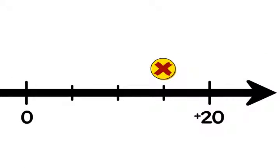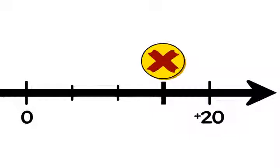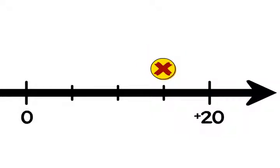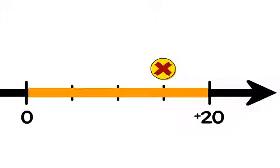What is step one? That's right, find the benchmarks. Let's use zero and positive 20, since point X is between them. To finish step one, what is the interval? You got it. The interval between zero and 20 is 20.